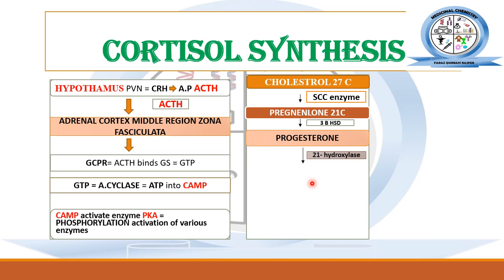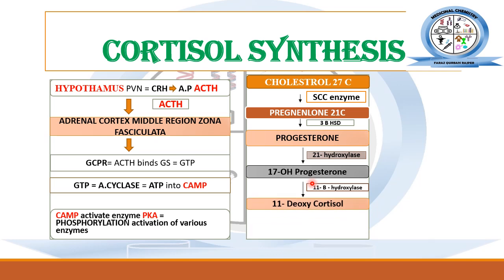In the next step, 17-alpha-hydroxylase enzyme acts on progesterone and converts it into 17-hydroxyprogesterone. After that, 21-beta-hydroxylase enzyme acts — in these two steps, hydroxylation takes place. The 17-hydroxyprogesterone is converted into 11-deoxycortisol. In the last step, 11-beta-hydroxylase enzyme acts on 11-deoxycortisol and converts it into cortisol.